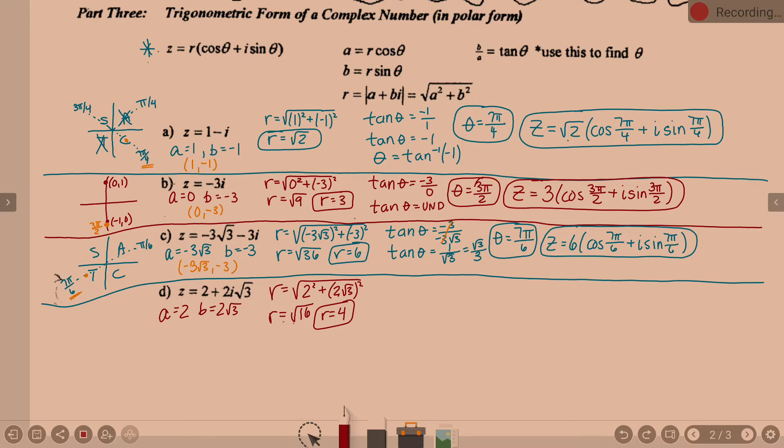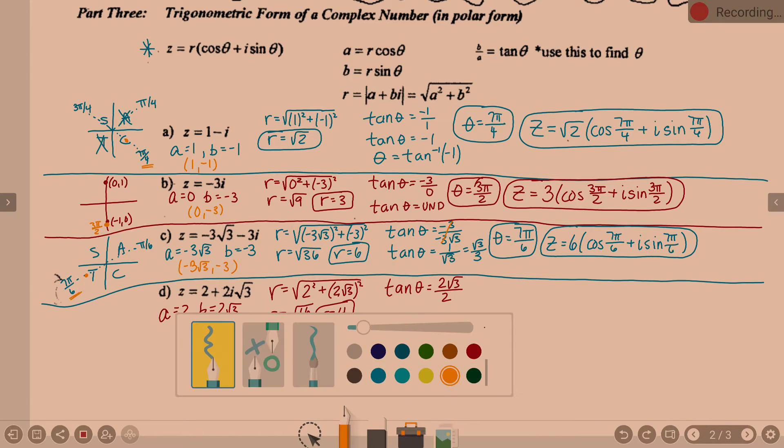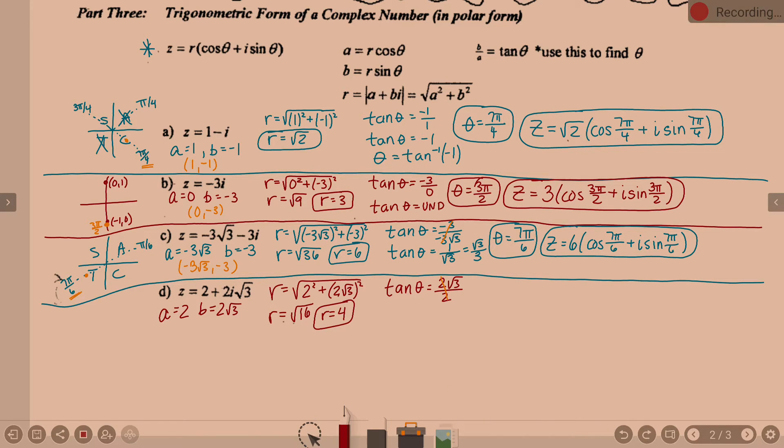What else? Tangent of theta equals 2 square root of 3 over 2. So tangent of theta, B over A, 2 square root of 3 over 2. The 2's cancel, which makes it much nicer. So now I have that tangent of theta is square root of 3.